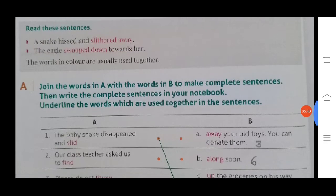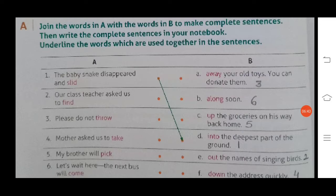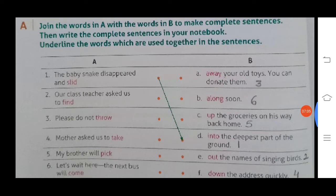We'll do exercise A. Join the words in A with the words in B to make complete sentences. Then write the complete sentences in your notebook and underline the words which are used together. Number one: the baby snake disappeared and slid into the deepest part of the ground.